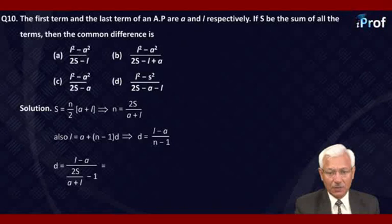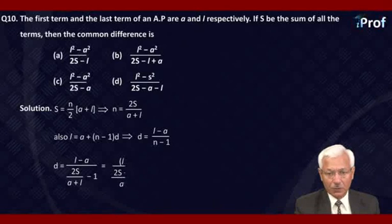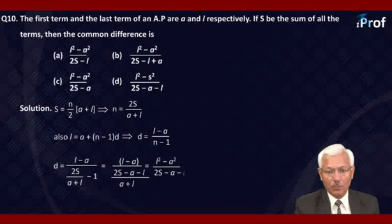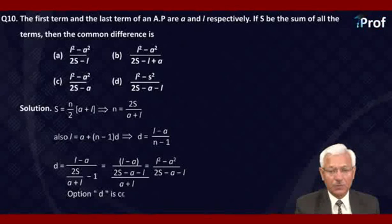Substituting N, we get D equal to (L minus A) divided by (2S upon A plus L minus 1), which simplifies to L squared minus A squared divided by 2S minus A minus L. This shows that option D is correct.